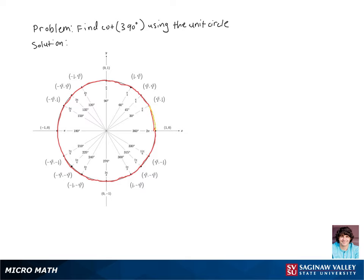Now cotangent is just cosine over sine, so the cotangent of 390 degrees is just going to be root 3 over 2 over 1 half.